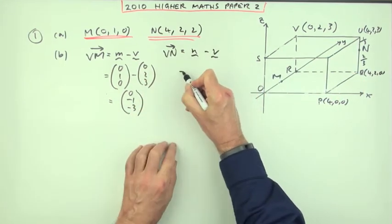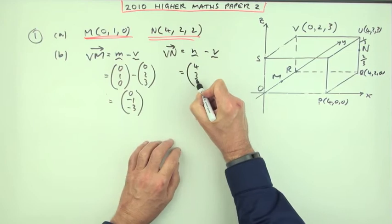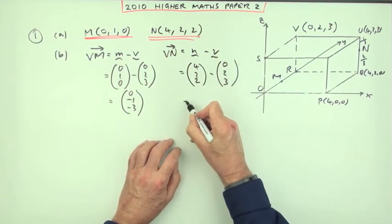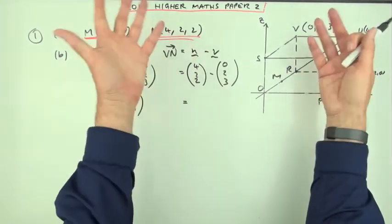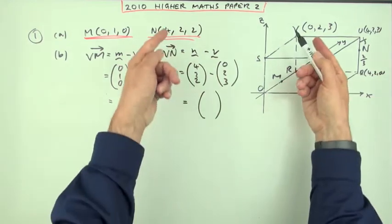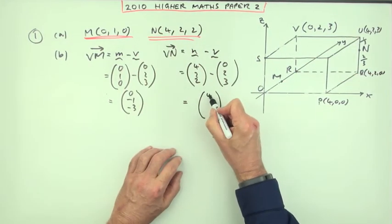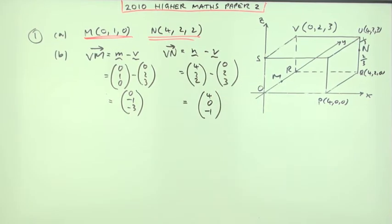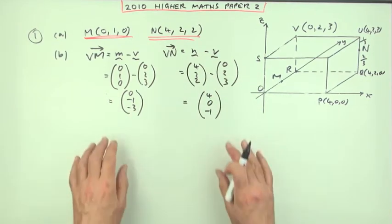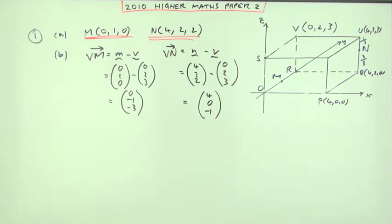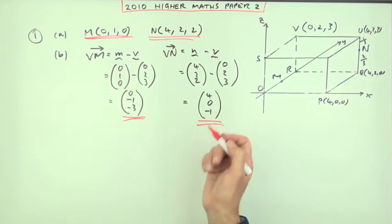N minus V. N is four, two, two. V is zero, two, three. Now that I've written them all out, although there they are staring me in the face, now I can do the subtractions, which again equally were just as obvious. Four take away zero is four, two take away two is zero, two take away three is negative one, and there's the same result. You're probably happier doing that because that's what you always did. But there's no need. You could just state those two results.